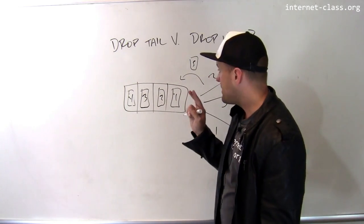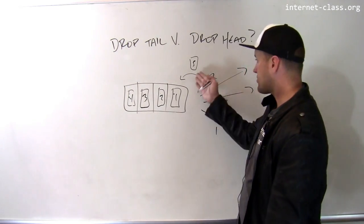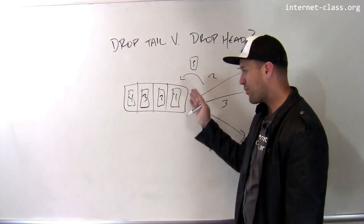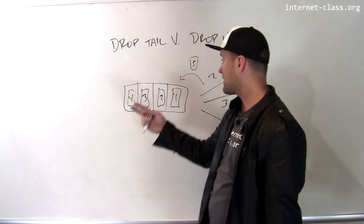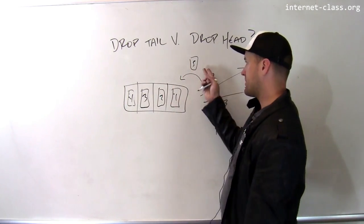Now it seems like the most fair thing to do, from some perspective, is to drop packet five. I mean, packet one got there first, or it got there before packet five did, and so if I'm going to drop a packet, it seems natural to drop packet five.